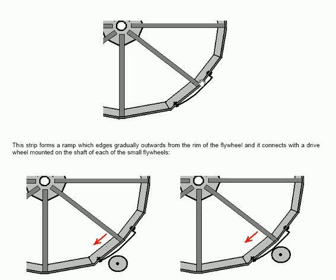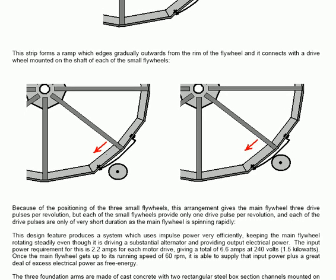The ramp edges gradually outwards from the rim of the flywheel and connects with the drive wheel mounted on the shaft of each of the small flywheels. So this is the circular drive pad here on a spinning flywheel and that touches the upper part of this strip and pushes the flywheel around. And that provides the drive to the entire large flywheel.